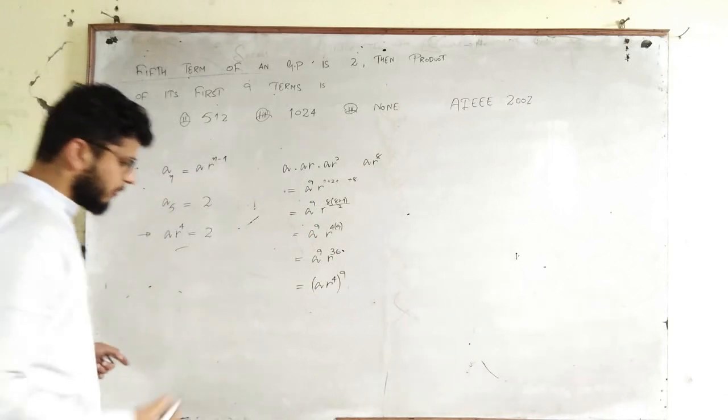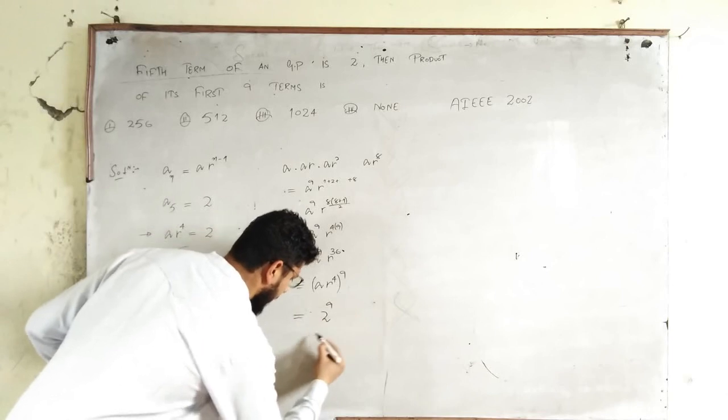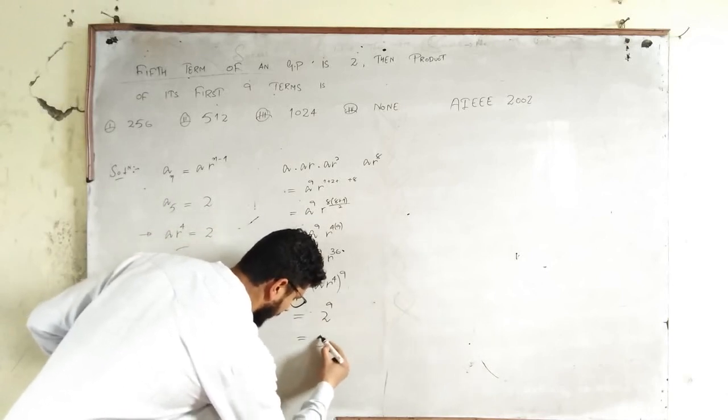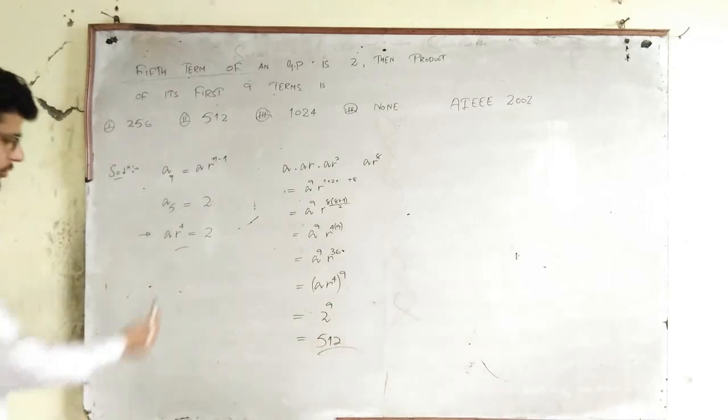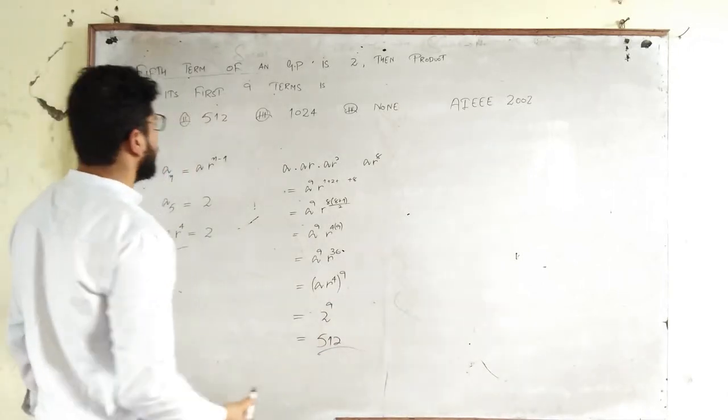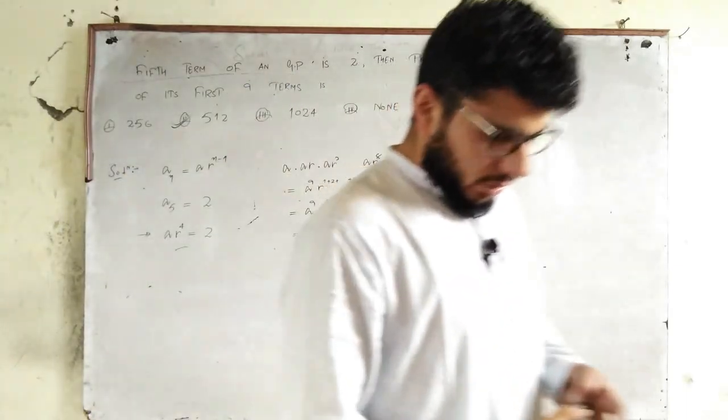Now, AR^4, you know the value is 2. So 2^9, which is 512. Substituting AR^4 here, you get 512. So this is the correct option. Thank you.